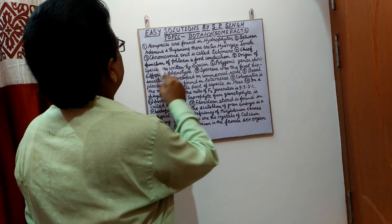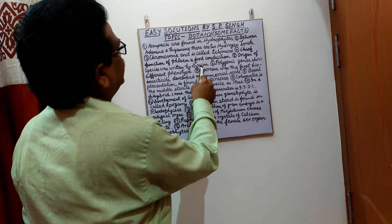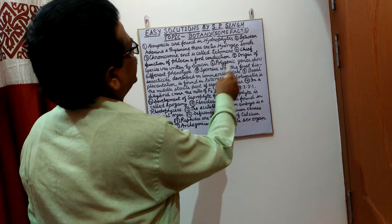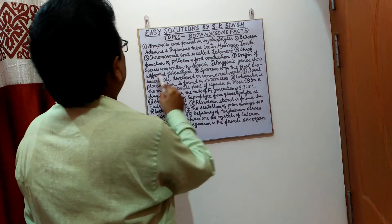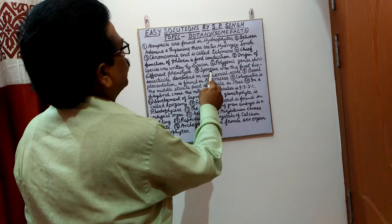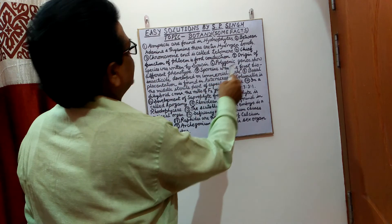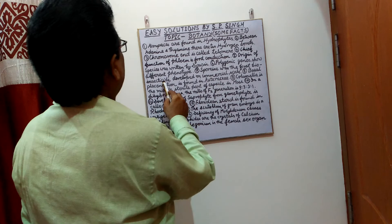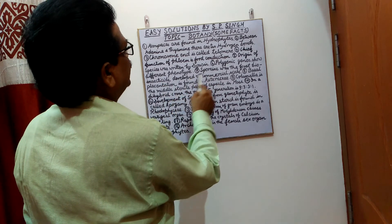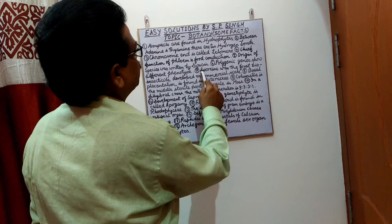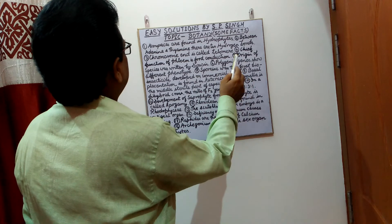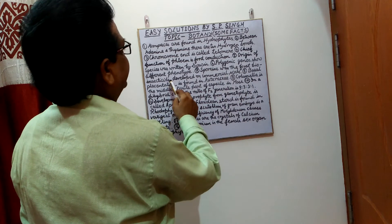Origin of Species was written by Darwin. Polygenic genes show different phenotype. Sporine was the first bio-insecticide developed on commercial scale.